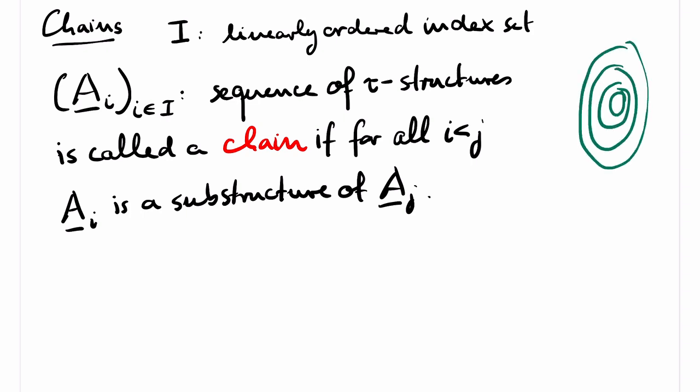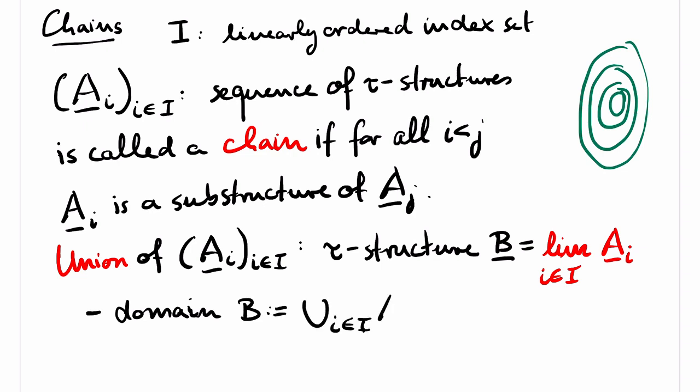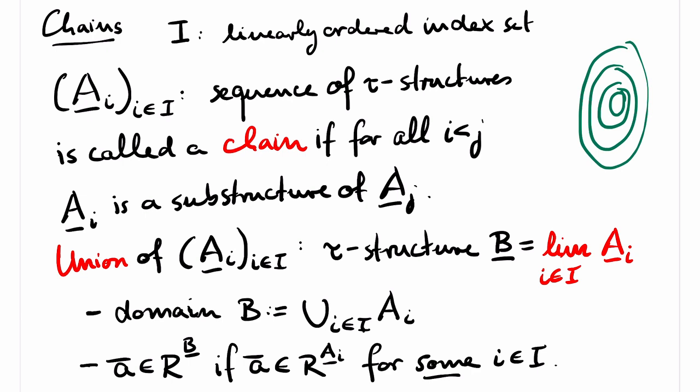So the chain in fact looks like an onion. The union of a chain is the whole thing viewed as a structure. Formally, it is the structure with the same signature as the structures in the chain, whose domain is the union of all the domains of the structures in the chain, and where a tuple is in one of the relations if for some index i, the tuple is in the corresponding relation in the i-th structure of the chain. Note that if the index set is well ordered, then this is equivalent to saying that the tuple is in the relation for all but finitely many indices.